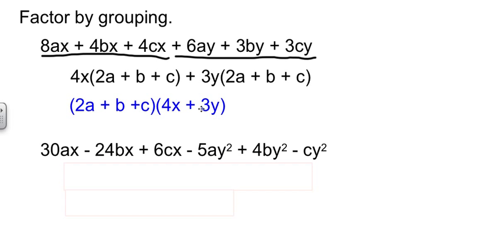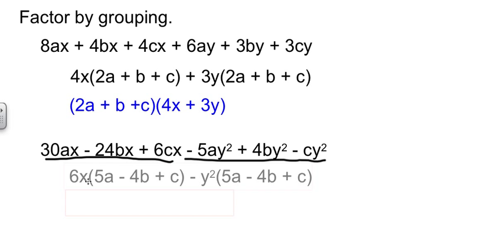Now consider our second one. I'm going to do the same thing. I'm going to group these terms together. But this one's going to be a little bit more interesting. Look at the first group and what's in common. A 6 and an x. So I'm going to take the 6x out. And if I factor out 6x, that leaves 5a - 4b + c. Then I'm going to look at my second group, and I'm going to look for what's in common, and there's a y².